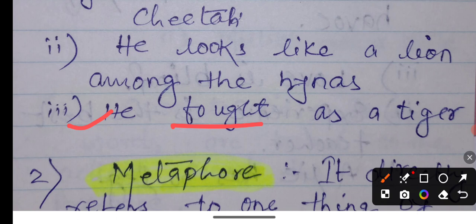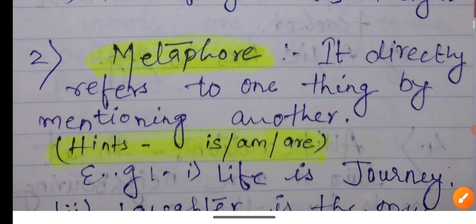He fought as a tiger. When someone fights like a tiger, we're not directly calling him a tiger, but we're appreciating his fighting style. He stood like a lion among the jackals. When we glorify someone by giving such examples, we use simile. So if you see 'like' or 'as', you can directly say it's a simile.